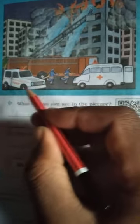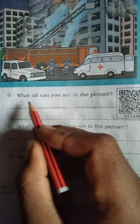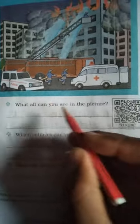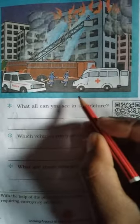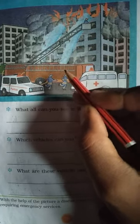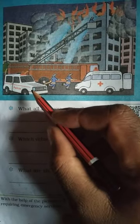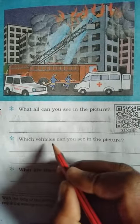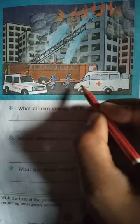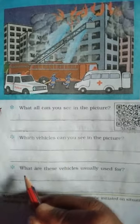In the next picture, you can see fire, smoke, and buildings. The vehicles shown include an ambulance, a police van, and a fire brigade. So in the picture, you can see fire and smoke, and the vehicles present are the fire brigade, ambulance, and police van.